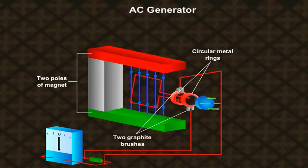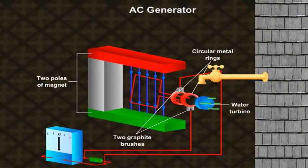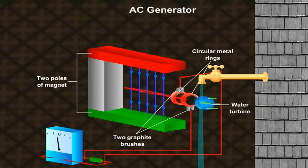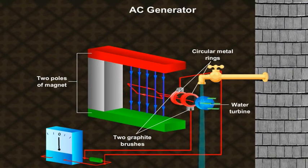We will connect the axle of the rectangular coil to a small water turbine. Water from tap is used to give a controlled rotation to the turbine. Let us open the faucet gradually and see what happens.